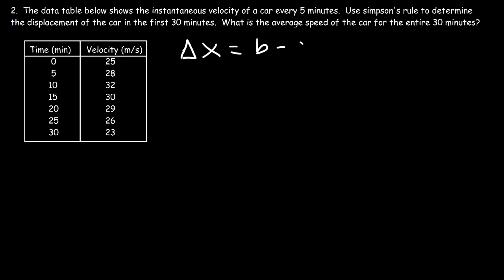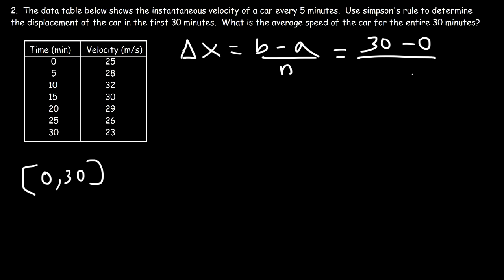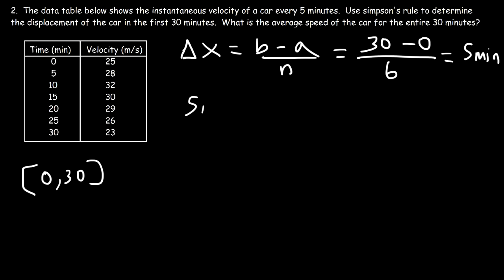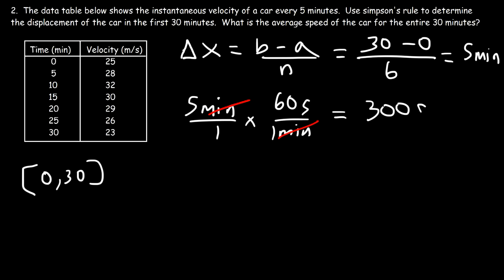First we need to calculate delta x, which is b minus a divided by n. The interval is the first 30 minutes, so a = 0 and b = 30. n is the number of intervals, which is 6, and 30 divided by 6 is 5. The velocity is in meters per second and the time is in minutes, so we convert: 5 minutes times 60 seconds per minute gives delta x = 300 seconds.